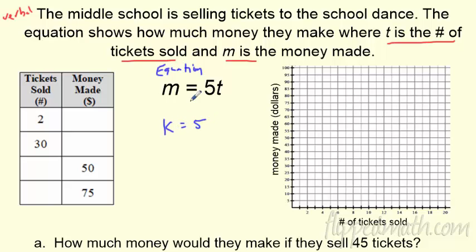Sure. If you don't like m and t because we're using money and tickets, you can easily say y equals 5x. This is the same thing if you really enjoy the x and y, but we're going to try to relate it to the context here. So we're going to use m for money and t for tickets. So k is 5. What does that mean? Well, it's $5 every ticket.